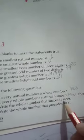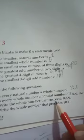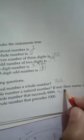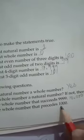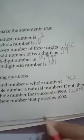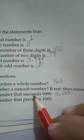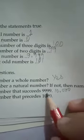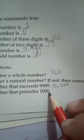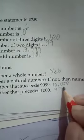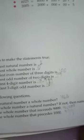Question number 3: write the whole number that exceeds 9999 — exceeds matlab agla number. 9999 ke baad aayega 10,000. Next: write the whole number that precedes 1000 — precedes matlab pichla number. Exceeds mein aap 1 plus karte hain, isliye 9999 + 1 = 10,000. Precedes mein aap 1 minus karte hain, toh 1000 - 1 = 999. Theek hai — yeh dono questions ab aapne apni book par solve karne hain. Agar samajh nahi aata toh pooch lein.